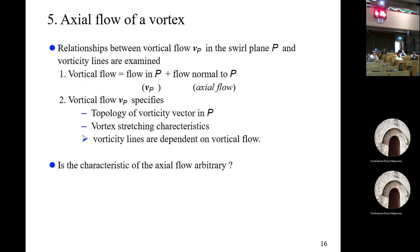We have shown that the vertical flow in the swirl plane specifies the topology of the vorticity vector, the vertical flow, and the vortex-stretching characteristics. Vorticity lines are thus dependent on vertical flow. However, vertical flow also has flow normal to the swirl plane — that is, axial flow. So we may wonder: is the characteristic of the axial flow arbitrary?